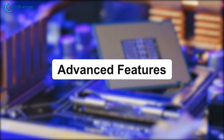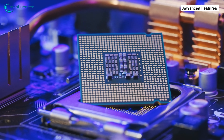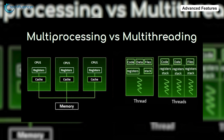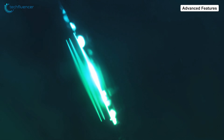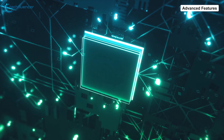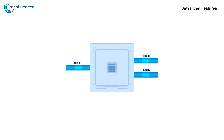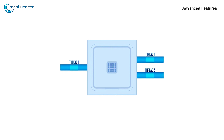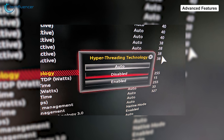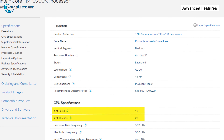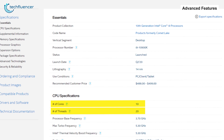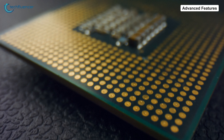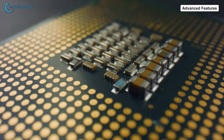Other features that set these processors apart are hyper-threading and turbo boost modes. Multi-threading technology enables each core to run multiple threads at the same time, making parallel processing more effective. One physical core can handle multiple threads of software because it works like two logical ones when hyper-threading is enabled. For instance, the Intel Core i9-10900K processor can have 20 threads. Lower-tier processors such as i3 and i5 lack these features, as they can only be seen on top-tier ones.